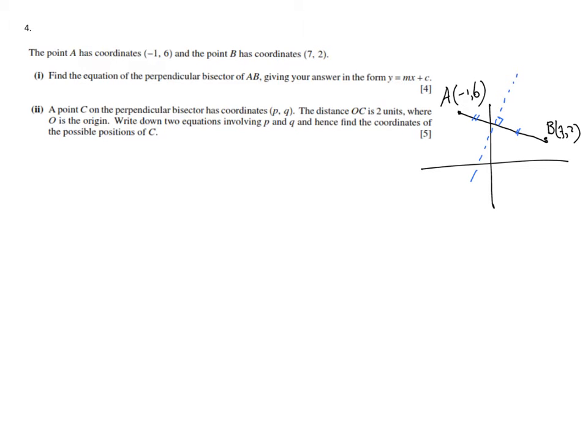The perpendicular bisector, what does that mean? Perpendicular: 90 degrees. And bisector: dividing it into two equal pieces. So roughly, we're talking about this line. So dividing AB into two equal pieces, and with a 90 degree angle.